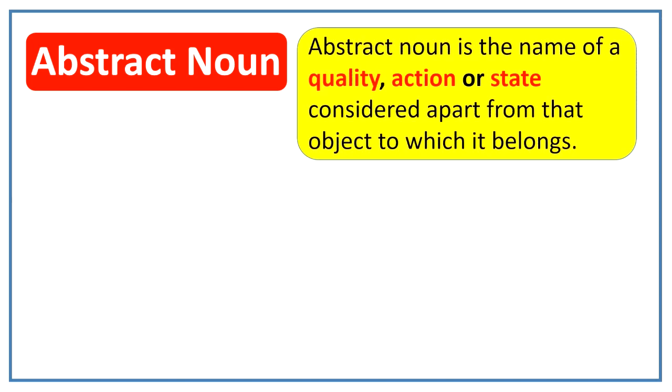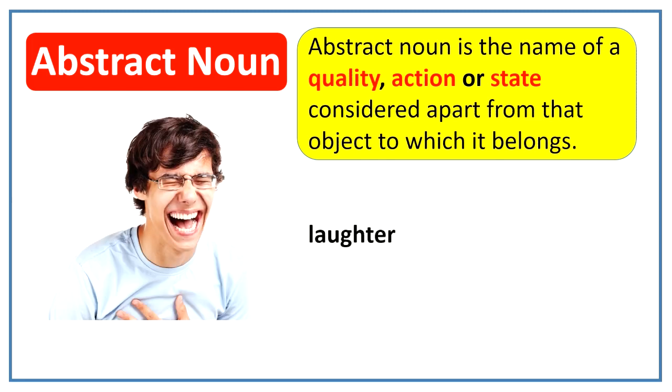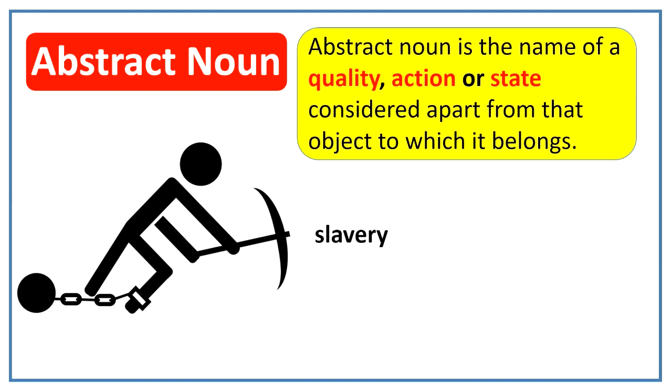What is an abstract noun? Abstract noun is the name of a quality, action or state considered apart from that object to which it belongs. For example, kindness. This is a quality. Laughter. This is an action. Slavery. This is a state.